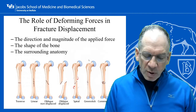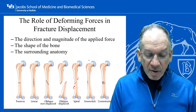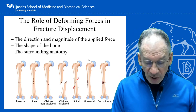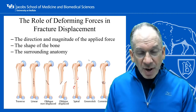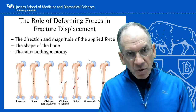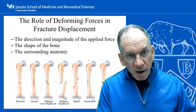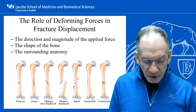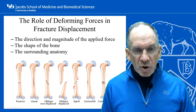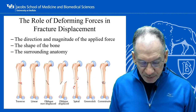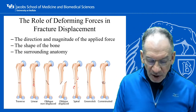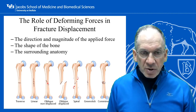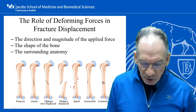The role of deforming forces and fracture displacement. The direction and magnitude of the applied force affects the fracture pattern, as does the shape of the bone and surrounding anatomy. Each fracture has its own personality — you can tell by looking at an X-ray how the force was applied. A simple transverse fracture implies a force applied perpendicular to the bone; a linear fracture implies compression; an oblique or spiral fracture implies a twisting mechanism.